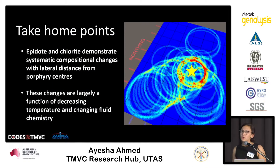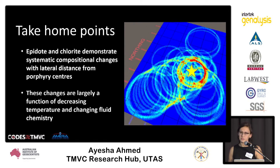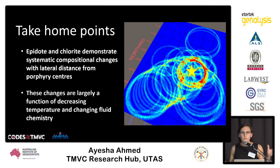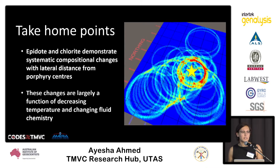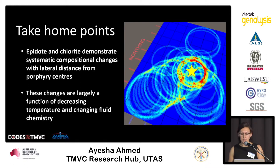By the end of this talk I hope to have shown you that epidote and chlorite mineral chemistry demonstrate systematic compositional changes with lateral distance from a porphyry center, and we can use these systematic changes to vector back towards mineralized centers. These changes are largely a function of decreasing temperature with distance from the deposit center, which has a direct effect on fluid chemistry.